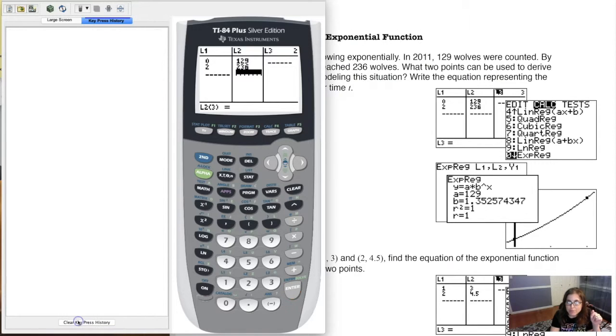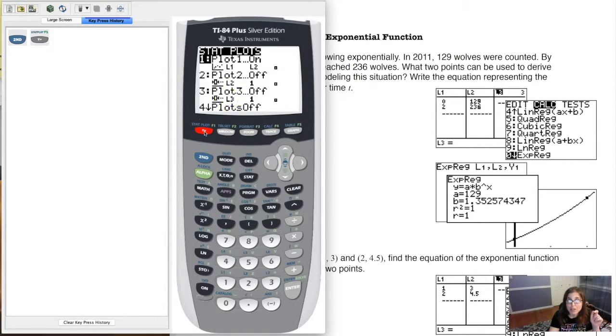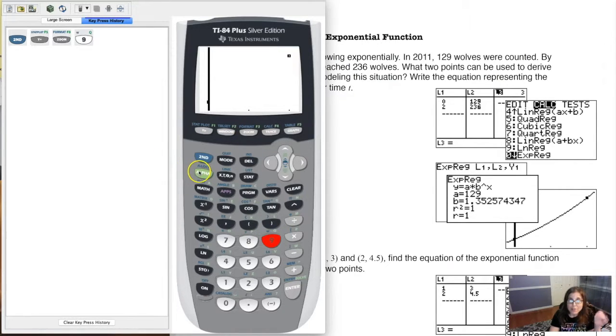I'm just going to clear out my key press history so you can see the newer parts of this. So we did data entry. Actually I guess we could look at our stat plot. It is ready to go. So I have a scatter plot selected. I've got L1 against L2. I hit zoom 9 and there's my two ordered pairs and I'm going to try and fit an exponential model between them.